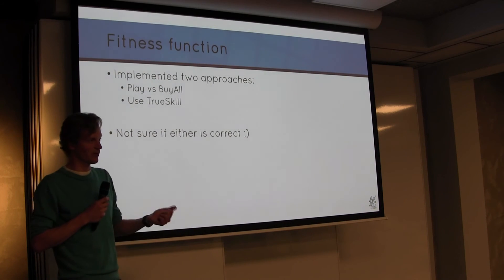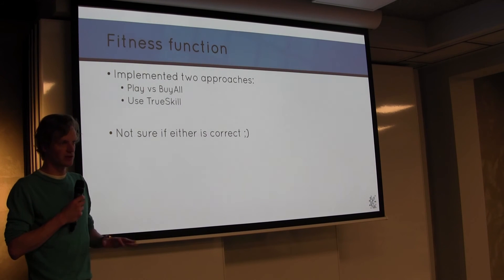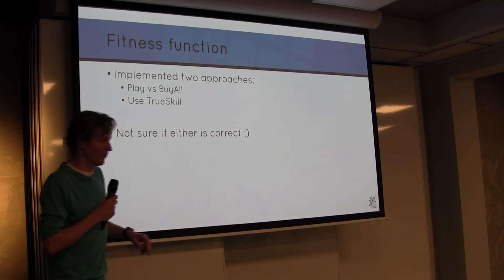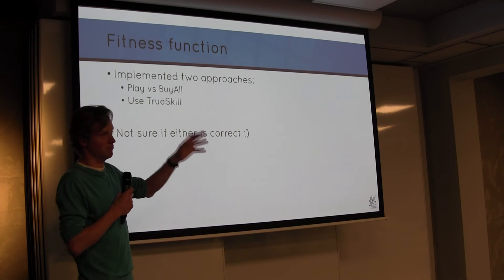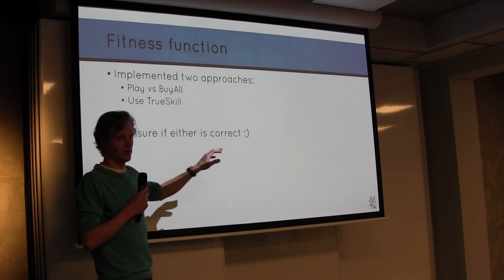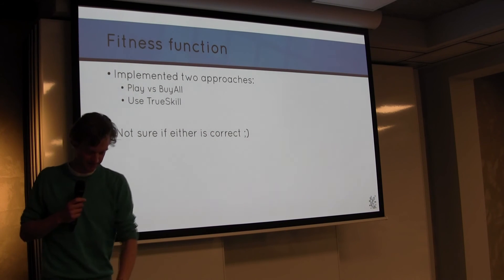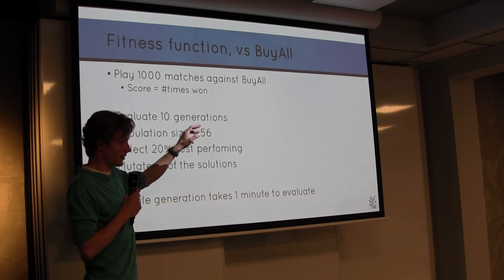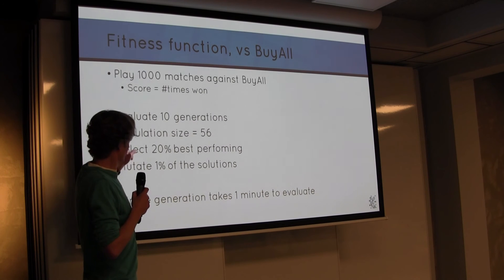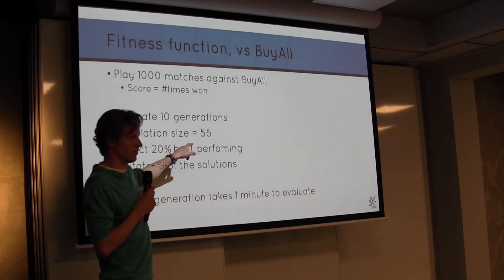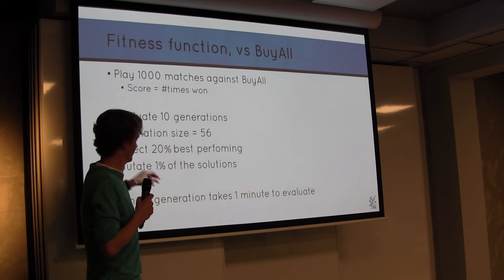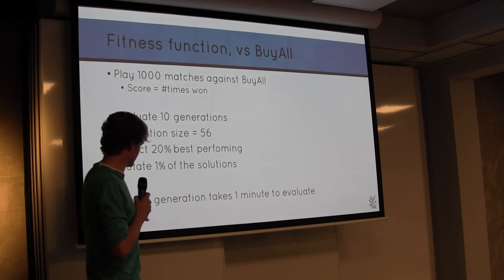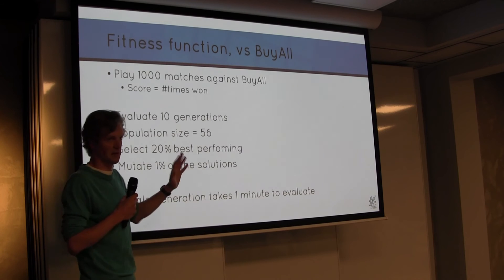But the fitness function is also quite tricky. Because how can you evaluate a Monopoly player? So I basically came up with the first strategy. I just play against the buy-all player, which is a sensible tactic. And I count the number of games you win. And the other one is much more advanced. It came from my colleague Vincent. And it's using TrueSkill. It's this magic algorithm. I'll explain it a bit. But I'm not sure if either is correct. So if you have any questions or any remarks regarding this, feel free. So the buy-all: we play a thousand matches against the buy-all player and we count the number of times you win. We evaluate for 10 generations. We have a population size of 56. I have eight cores in my laptop. 56 divided by 8. 20 best performing. Do some mutations. And in my laptop a single generation takes a minute to evaluate. So 10 generations, like 10 minutes, 12.